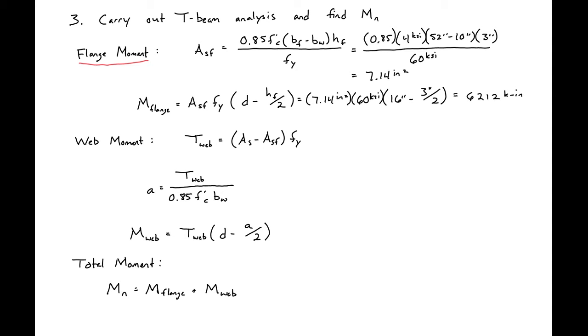Next we can move on to our web and remaining steel force couple. We can first find the tension force provided by the remaining steel. We'll take our total steel, 9.36 square inches, subtract off the steel that we used up in the flange force couple, 7.14, and take this times our 60 ksi yield strength. We'll find our t sub web to be 133.2 kips.